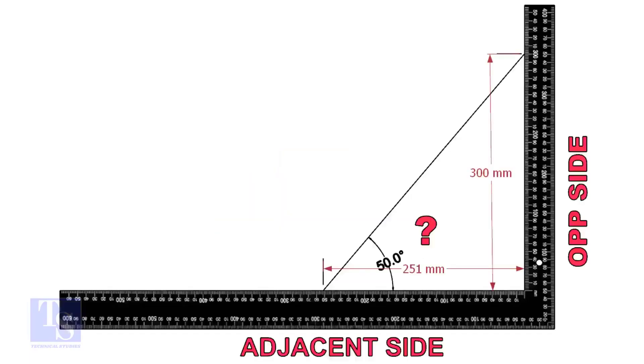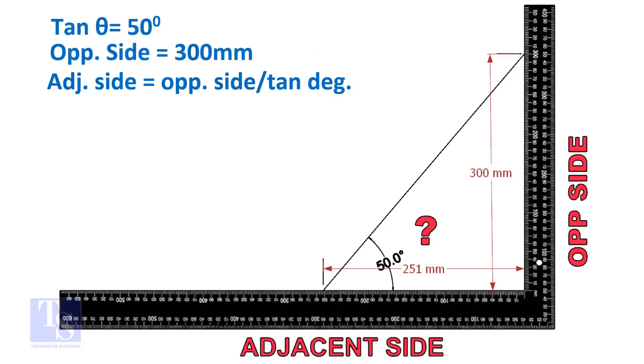Let us learn some TAN rule calculation. TAN degree is equal to opposite side divided by adjacent side. For this formula we know only the TAN degree. Let us assume the opposite side is 300mm, but you can take any suitable dimension as required.